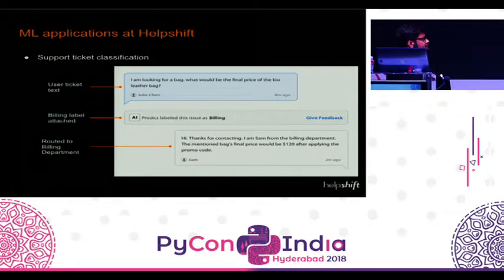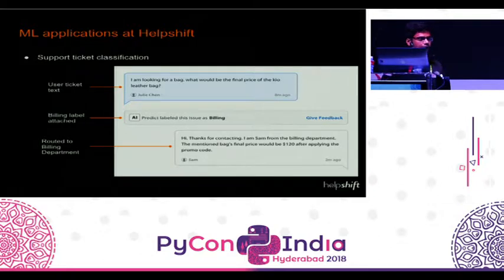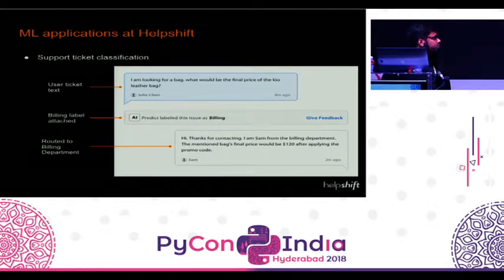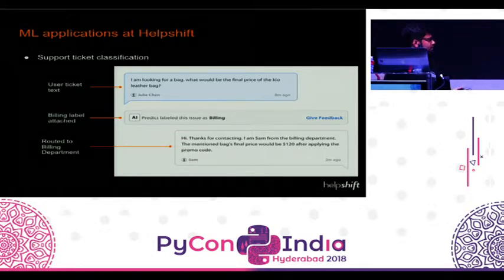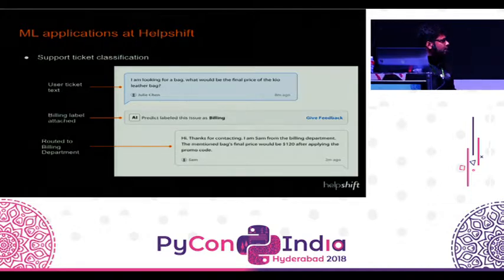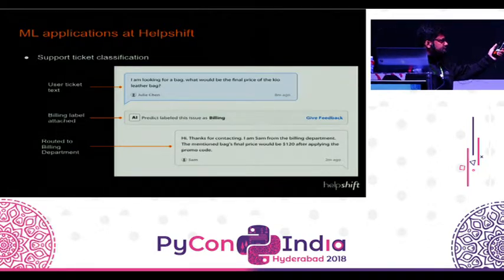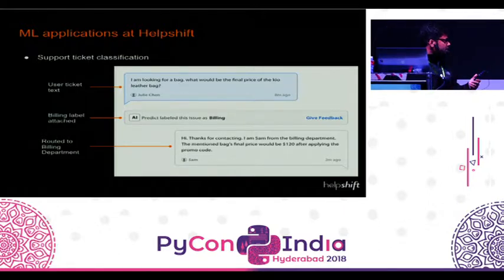One of the main applications at HelpShift is support ticket classification. An end user files an issue and agents get those issues. For example, a user ticket might say 'I'm looking for a bag — what would be the final price of this leather bag?' Our ML service accurately classifies that ticket into one of the labels defined by our customers. Here the query is about price, so we label it as a billing-type ticket. Our customers then define that if a ticket is billing, route it to the agent handling billing tickets.